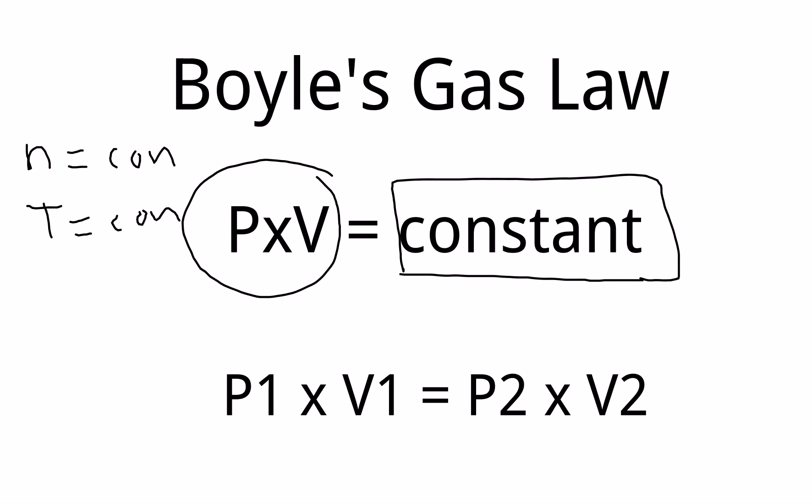and that means that pressure 1 and volume 1 should equal pressure 2 and volume 2, provided that we hold them constant, the moles and the temperature. So I can have an initial pressure and volume reading, and I only need one of these two, pressure 2 or volume 2, and I should be able to figure out the other one algebraically.